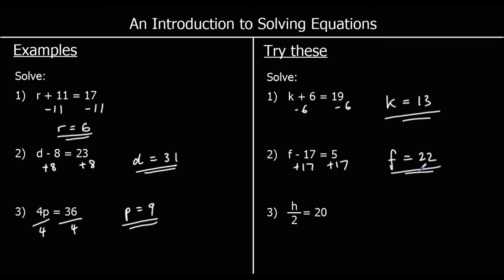And the third one, we've got H divided by 2 equals 20. To get H by itself, we can do the opposite of dividing by 2, which is timesing by 2. So if we times both sides of the equation by 2, we get H equals 40.